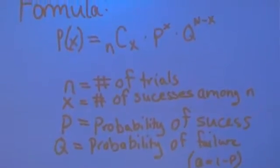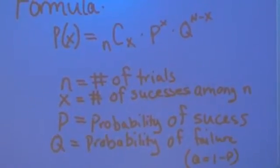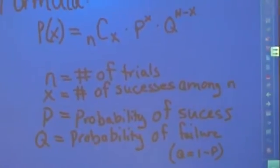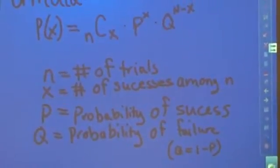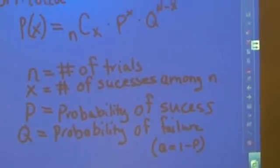n equals the number of trials, x equals the number of successes among the trials, p equals the probability of success, and q equals the probability of failure. So q equals 1 minus p.